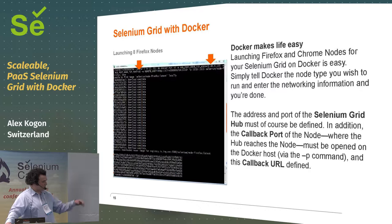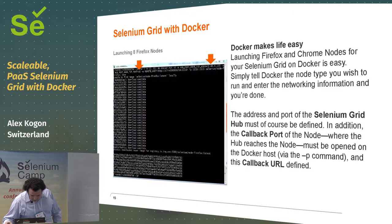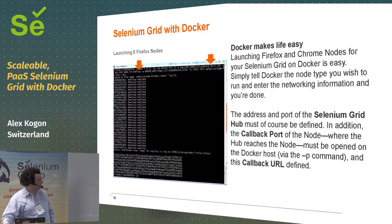Docker is a really simple way of running software. Somebody produces a Docker image for you and puts it up on the Docker registry, and you just say I want to run this piece of software. Your computer checks if it's there — if it's not, it downloads it and runs it. Here we are running a whole bunch of Firefox nodes. I just tell Docker that I want to run selenium/node-firefox, it goes to the Docker registry, downloads it, and runs it for me.